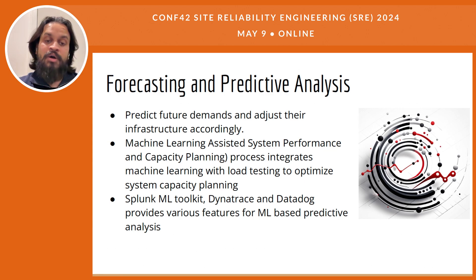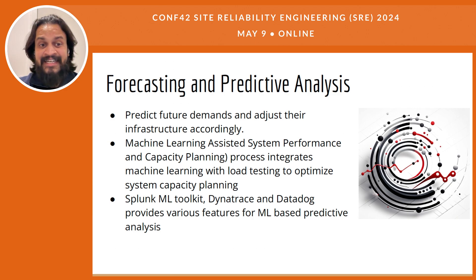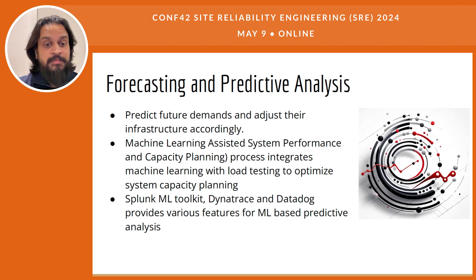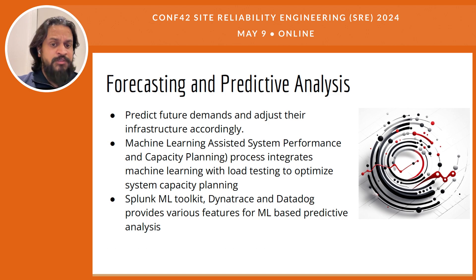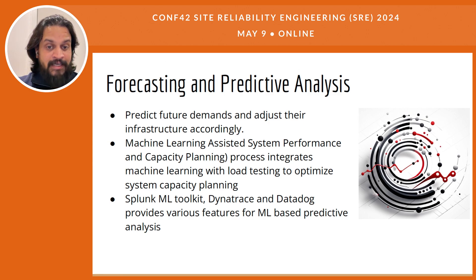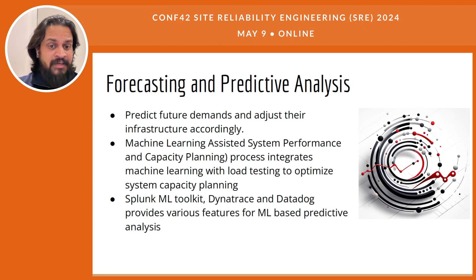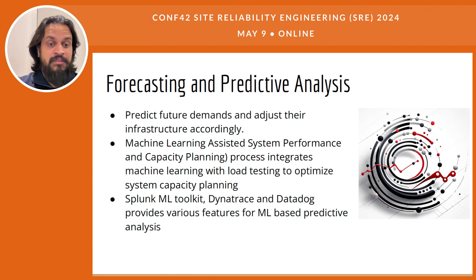Several advanced tools offer machine learning capabilities to facilitate predictive analysis in capacity planning. Splunk's Machine Learning Toolkit allows users to create custom models tailored to specific system dynamics, enabling precise forecasting of system needs. Datadog provides real-time analytics and automated baselining, which are crucial for detecting deviations in system performance and predicting future state. Datadog also leverages these capabilities with a predictive monitoring feature that forecasts potential outages and scaling needs, empowering teams to harness the power of AI for making more accurate predictions about system demands and significantly improving capacity planning strategies.